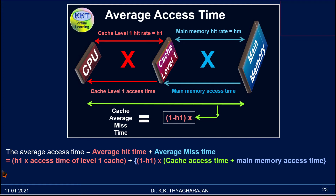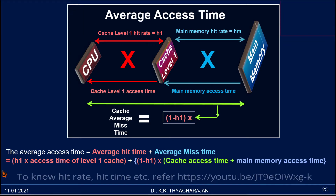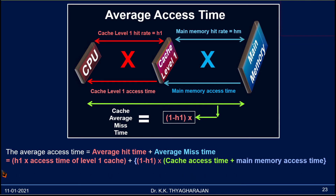Hello, this is Tyagarajan. Welcome back to my channel. In this video I am going to explain how to find the average access time for a CPU when cache is present between CPU and memory. If you are not familiar with hit time, miss time, hit rate, etc., see my previous video by clicking on the link that appears at the top of this video frame. This is the CPU, this is the primary cache or Level 1 cache.